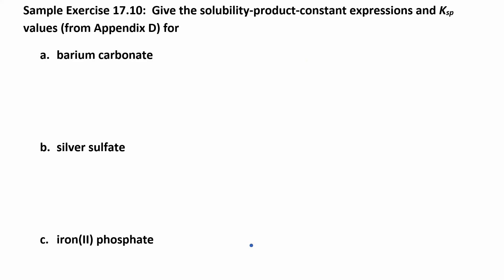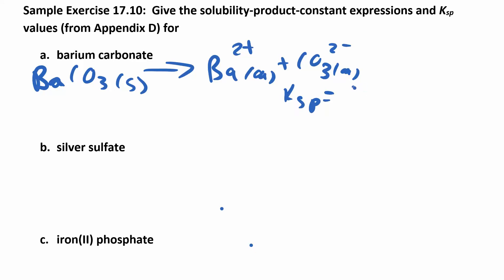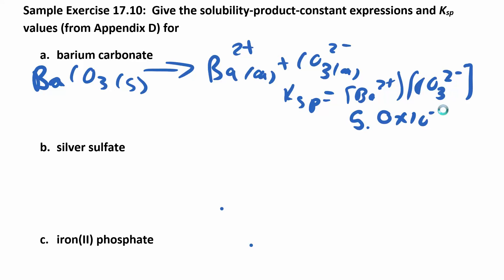Barium carbonate: carbonate has a minus 2 charge and barium has a plus 2 charge. So the solid barium carbonate dissociates into barium ions (aqueous) and carbonate ions (aqueous). The Ksp expression is just [Ba²⁺][CO₃²⁻]. Looking that up in the table, the Ksp is about 5.0 × 10⁻⁹ — very small.